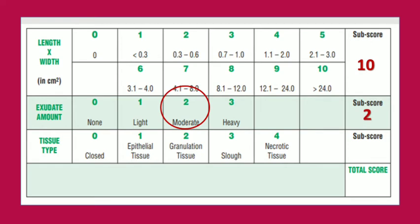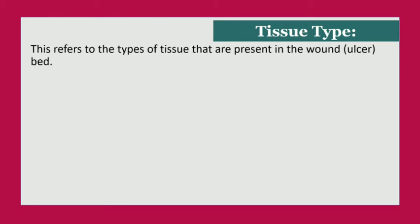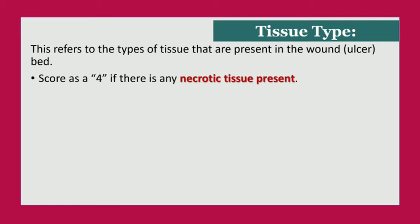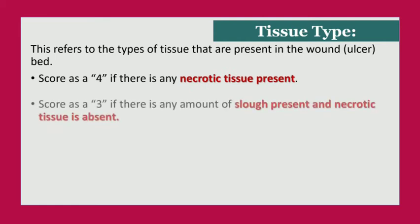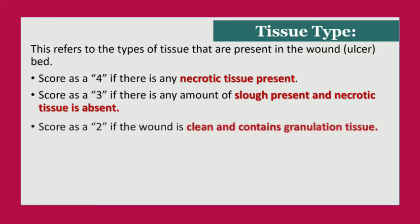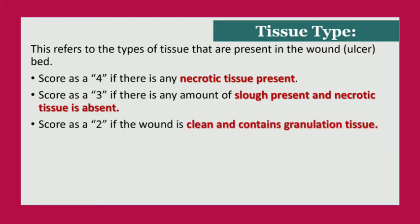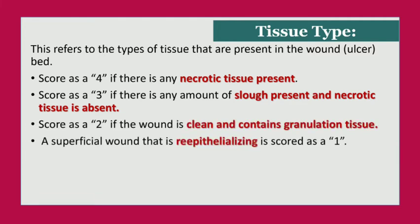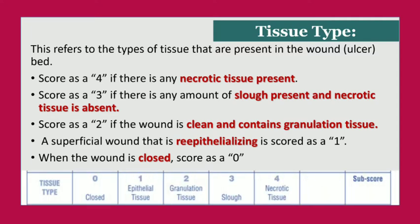The third parameter is tissue type — the type of tissue present in the wound. Score 4 for necrotic tissue, 3 for slough, 2 for clean granulation tissue, 1 for re-epithelializing tissue, and 0 when the wound is closed. A pictorial chart is provided for reference.